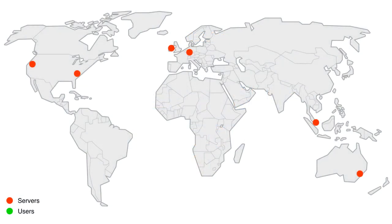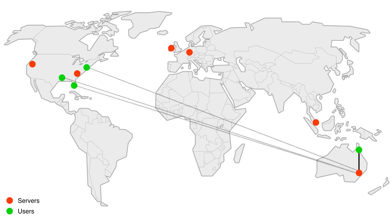First, the problem we are trying to solve. The usual way people distribute video conferencing services geographically is they deploy servers in a bunch of different places throughout the world. Then when a conference starts, they initially select one server and that's where the conference is hosted. For example, I'm using red dots to indicate servers and green dots for users. A user from somewhere in Australia starts a conference, a server in Sydney is chosen, and then a bunch of people from the US join — and the server is in Australia, which is obviously inefficient.